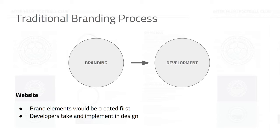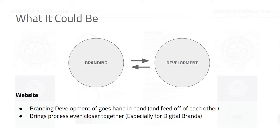I want to back up and talk about the traditional branding process, especially if you come from a traditional agency. You get a team or unit of people that work on branding, and once the branding is in a polished place, it gets kicked to the development team. Your brand elements will be created first, which means you have to wait for them in most cases. The developers just take it and implement it. However, what could be done is the branding could happen hand in hand with development — which is a useful case especially for digital brands like startups that don't have a dedicated development department, allowing them to think about branding and how they're represented online as they go through developing the company.